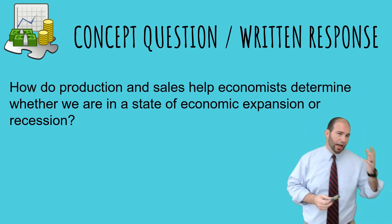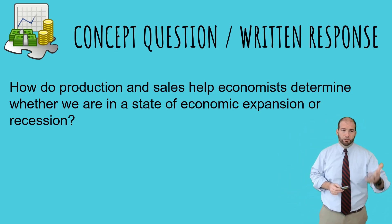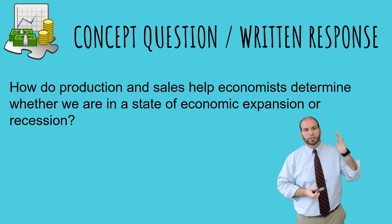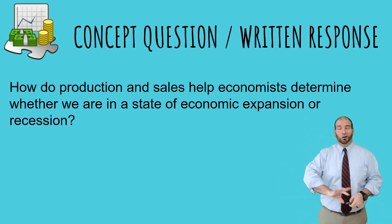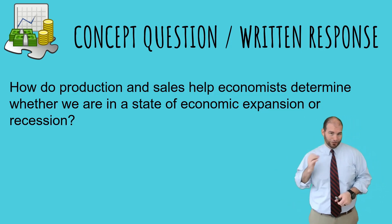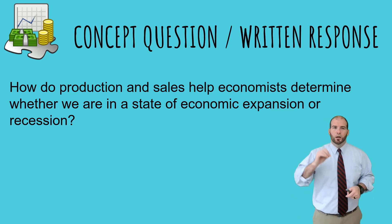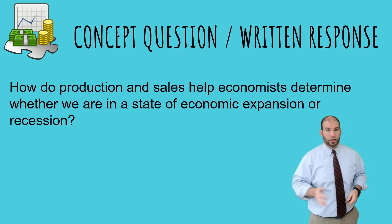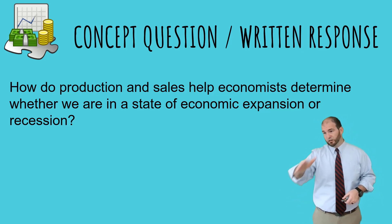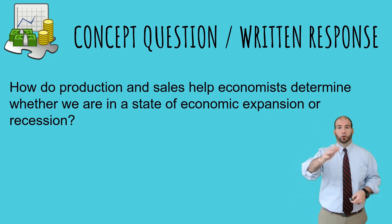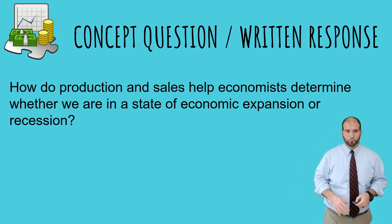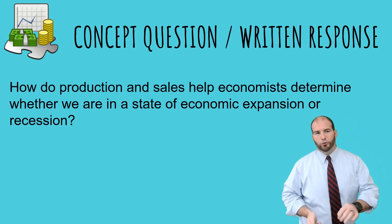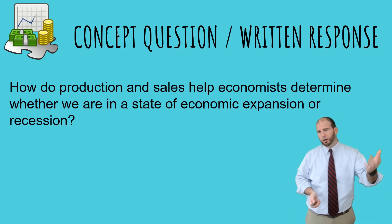Expanding basically means you're hitting on all cylinders and producing as much as you can. Growth means you've added, like, another addition to your warehouse to up your production — that would be growth. So production and sales really help as a microeconomic indicator to understand if good things are happening like expansion or growth. The question here is: how do production and sales help economists determine whether we are in a state of economic expansion or recession? A recession would be the opposite of expansion — you are not selling as much as you once were and going in the wrong direction. Pause me, answer that completely, and we're moving on.